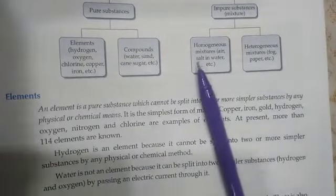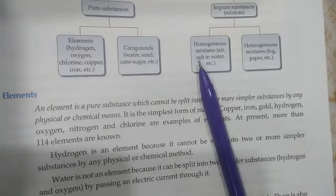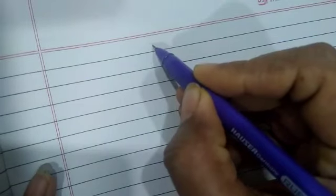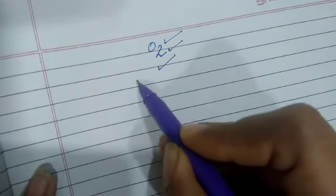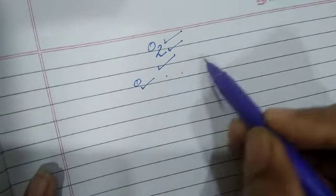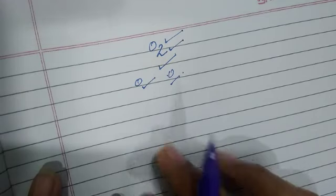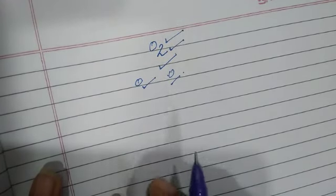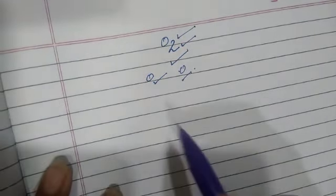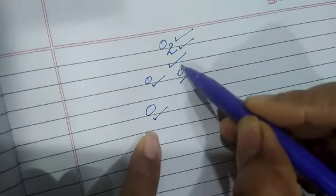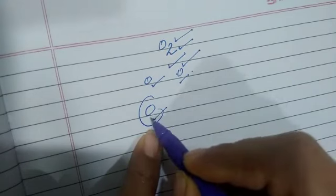Why are these called elements? Each element has its own set of properties. For example, the oxygen atom has all the properties of the oxygen element. Only one kind of atom is present in an element. This atom is the basic unit, and together these atoms form the molecule of that element.